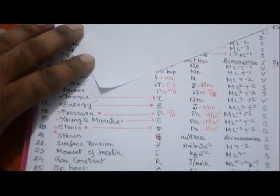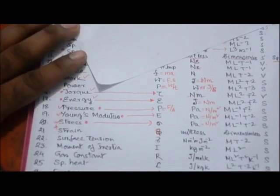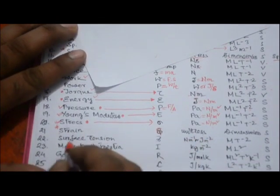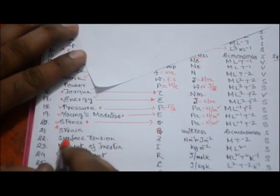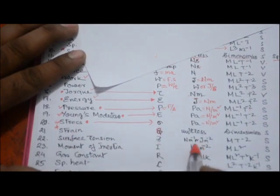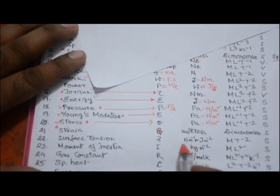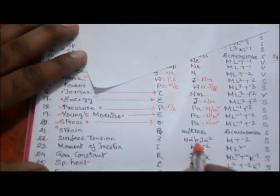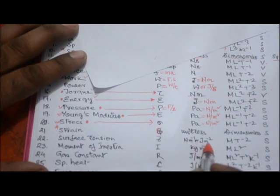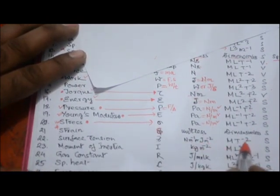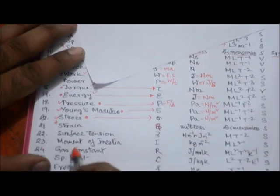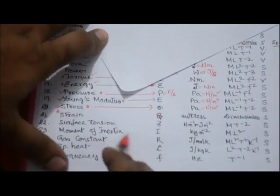Surface tension is denoted by gamma (γ). Its unit is newton per meter (force per length), or equivalently joule per meter square. The dimension is MT⁻².